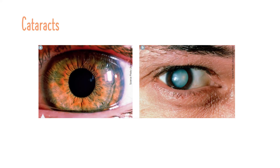A cataract is a clouding of the lens that lowers the lens's ability to transmit light. This results in heightened sensitivity to glare from intense sunshine and impaired vision of both close and distant objects. Most cataracts develop as part of the aging process. Long-term and unprotected exposure to UV sunlight, smoking, diabetes, and long-term use of corticosteroids are among the increased risk factors for developing cataracts.